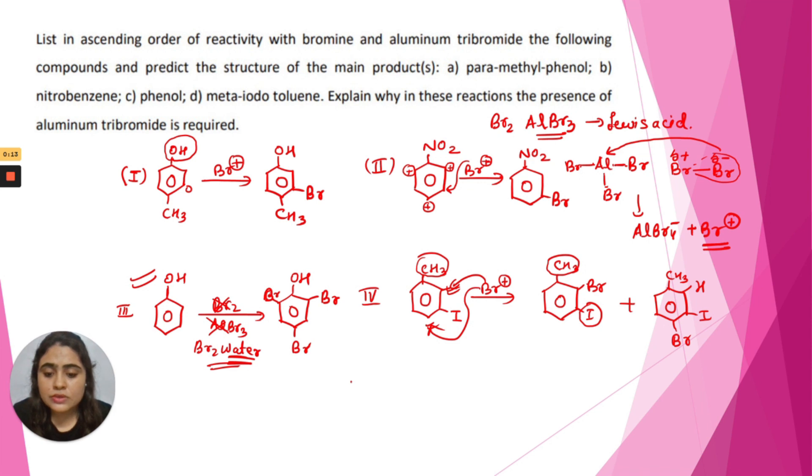So the most reactive compound is compound 2, then compound 4, then compound 1, and then compound 3. This is the ascending order of reactivity of these compounds. Thank you.